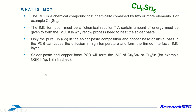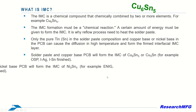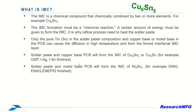For instance, solder paste and a copper-based PCB create the IMC of Cu6Sn5 or Cu3Sn, as seen in OSP, ENIG, and ISN finishes. Solder paste and a nickel-based PCB create the IMC of Ni3Sn4, as seen in ENIG, ENXG, and ENAPIG finishes.